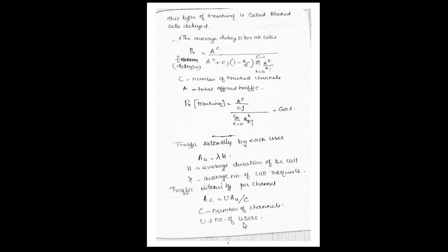The call sitting in the queue experiences a delay. That is the average delay. The formula is: a to the power c, divided by [a to the power c plus c factorial into (1 minus a by c) into the sum of a to the power k divided by k factorial]. Here, c is the number of channels and A is the total offered traffic.